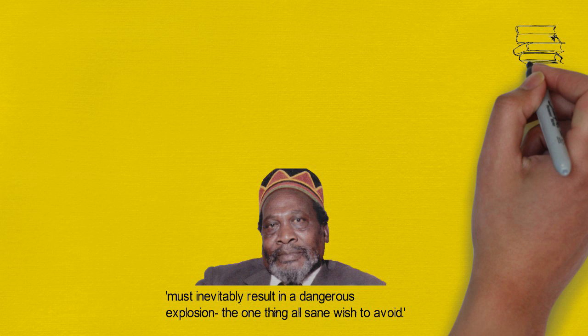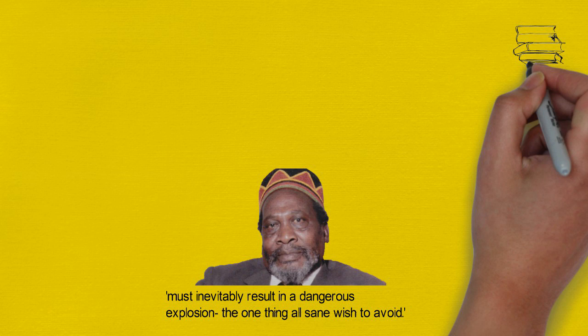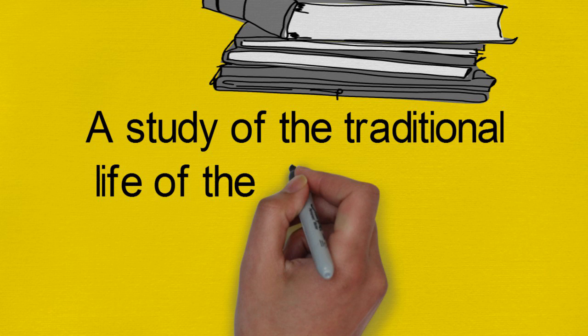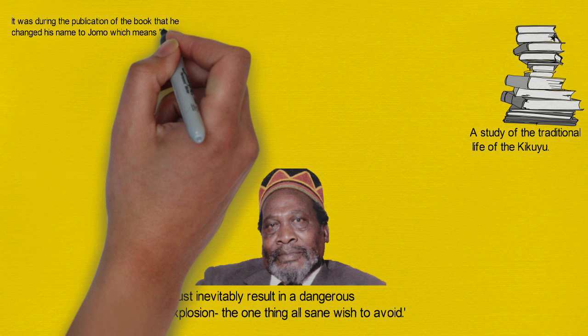On Kenyatta's return to England, he went to study under Bronislaw Malinowski at the London School of Economics. In 1938, his thesis was revised and published as Facing Mount Kenya, a study of the traditional life of the Kikuyu. It was during the publication of the book that he changed his name to Jomo, which means 'Born of the Spear.'